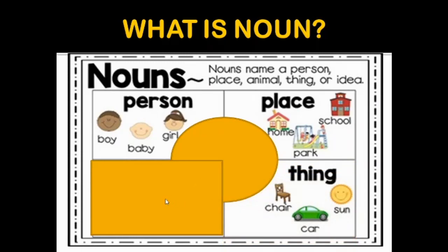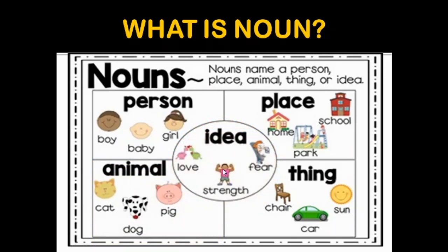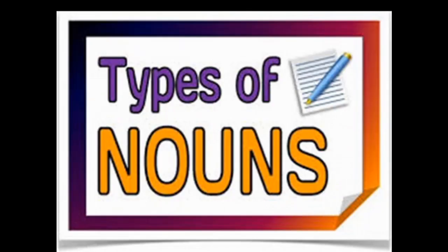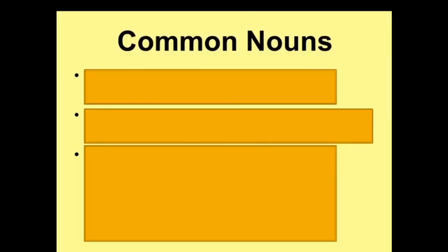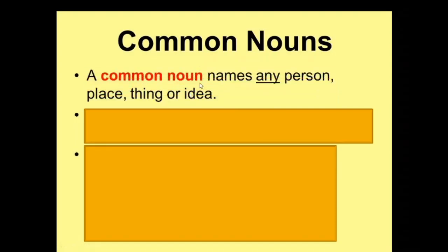Animals like cat, dog, horse, and pig are nouns. An idea is an emotion or a feeling which you cannot show directly, so we name that idea — like love, strength, fear. These are also called nouns. Now let's explore the types of nouns. The first type is the common noun.